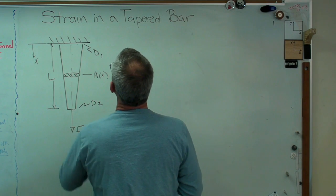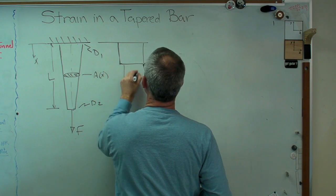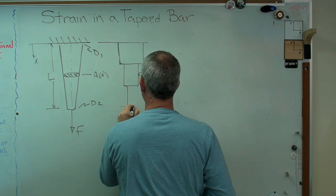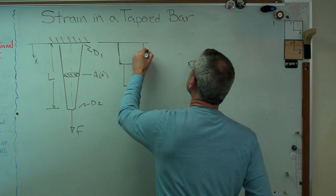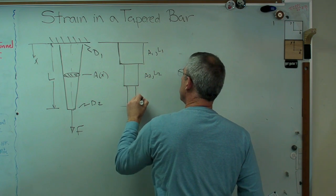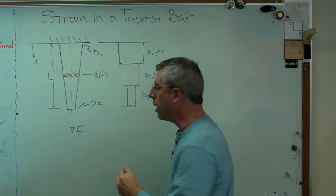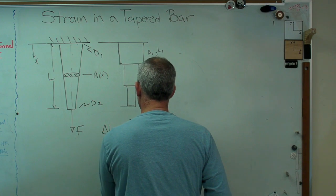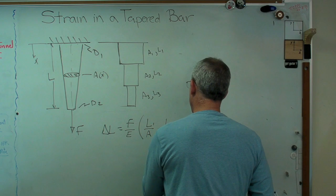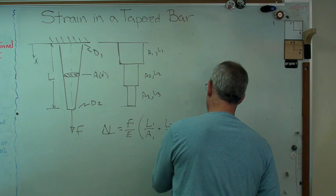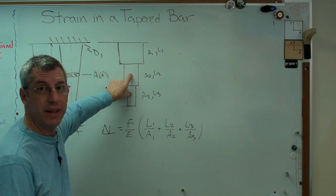If I do this, I could have one constant segment, here's another one, and here's another. So I've got three constant cross section segments, and I can analyze every one of these using that FL over AE expression. So I've got A1 L1, A2 L2, and A3 L3. My delta L is going to be F and E don't change, but L and A do. FL over AE, so L1 over A1 plus L2 over A2 plus L3 over A3. That's the displacement from each of the segments added up, and that's approximately the answer to that.